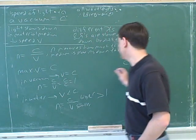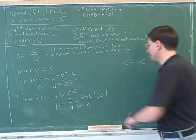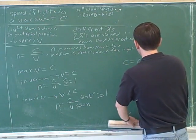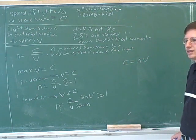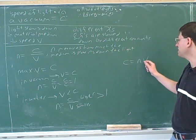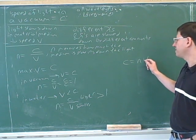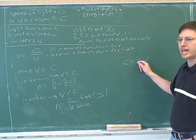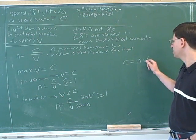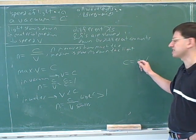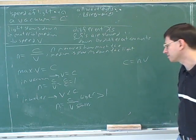This equation could be written like this. No, it couldn't. Well, we know that V, the maximum V is C, and then N would be 1. And every time else, V is going to be smaller than C. Right, so then N has to be bigger than 1 for the equation to work. Okay.